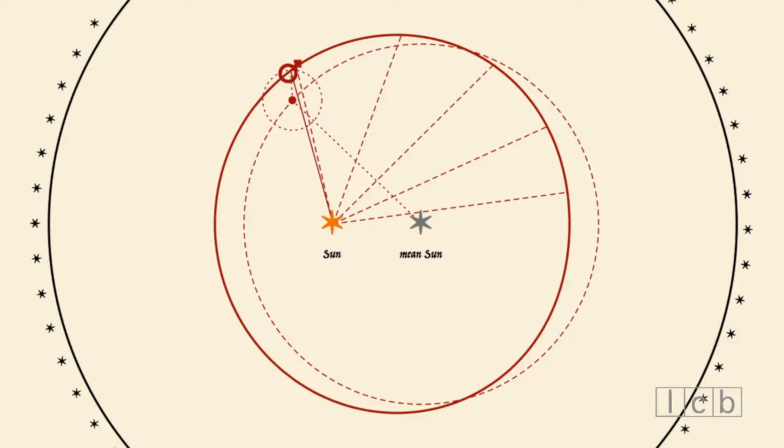While the center of the epicycle completes a counter-clockwise orbit around the mean Sun, the planet completes two counter-clockwise orbits around the center of the epicycle.